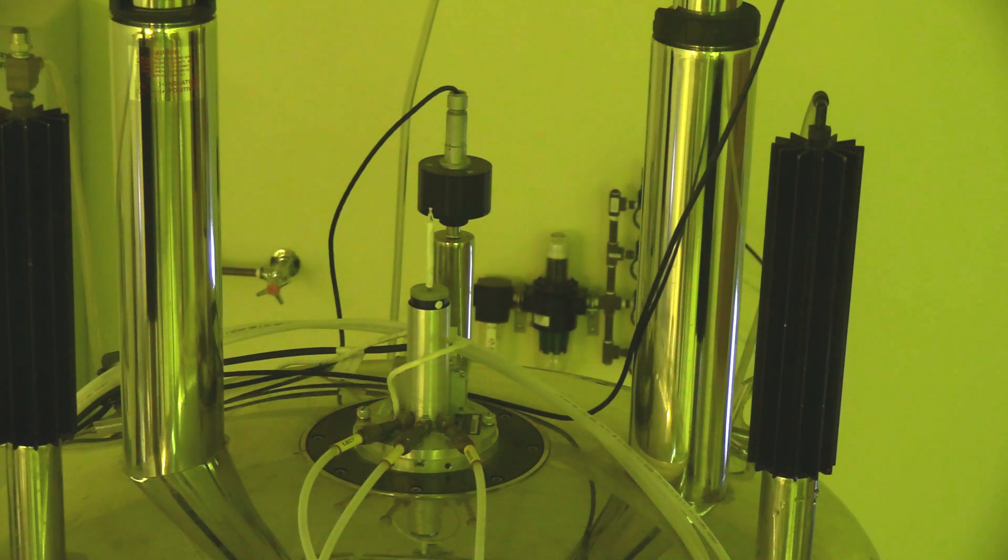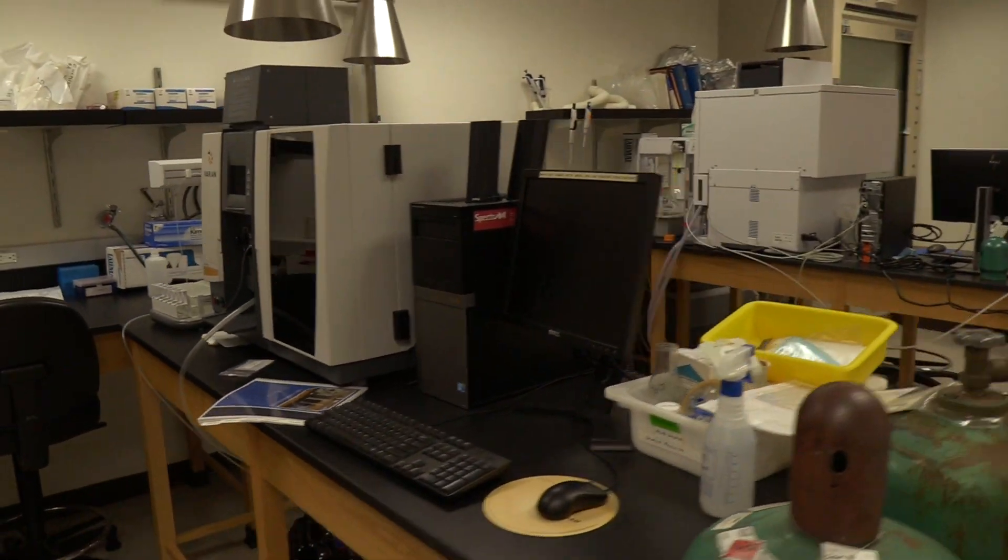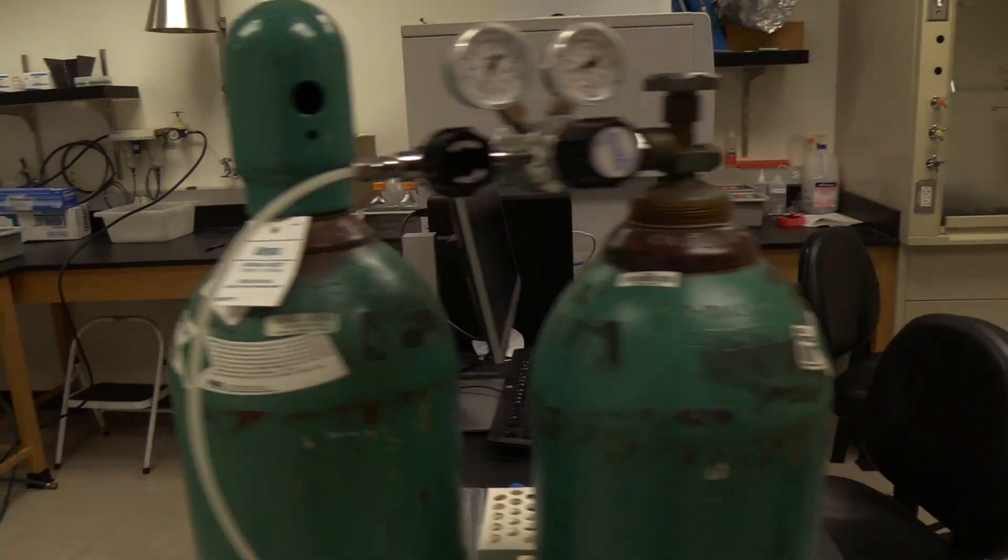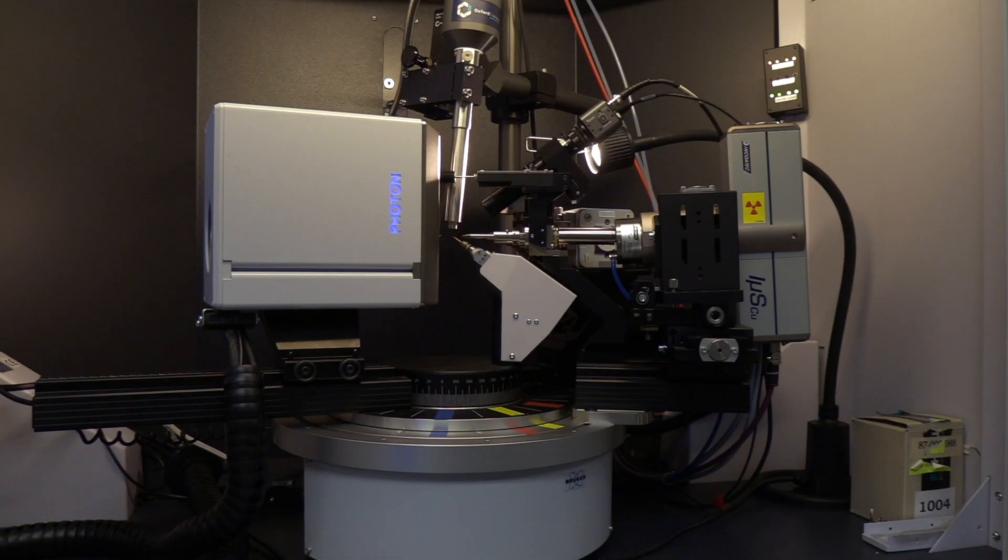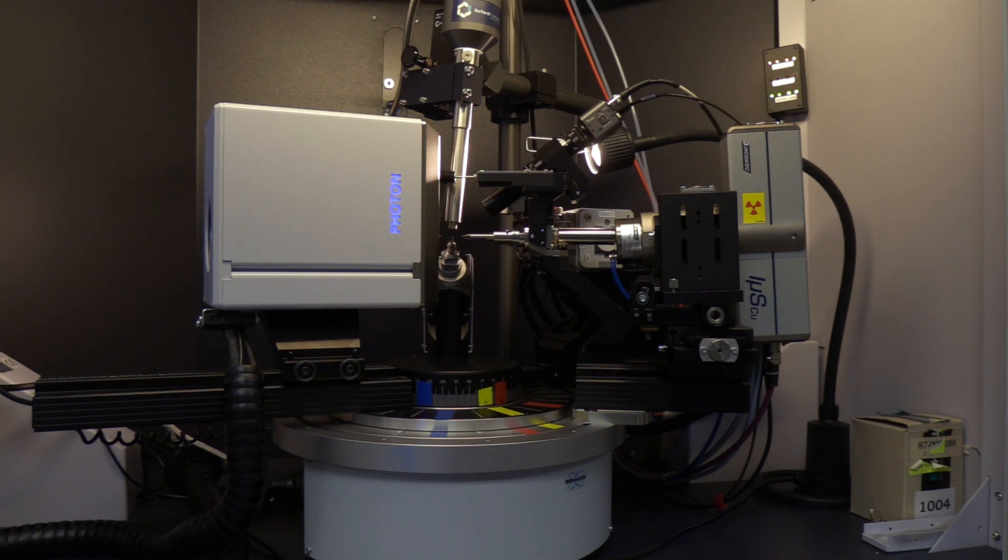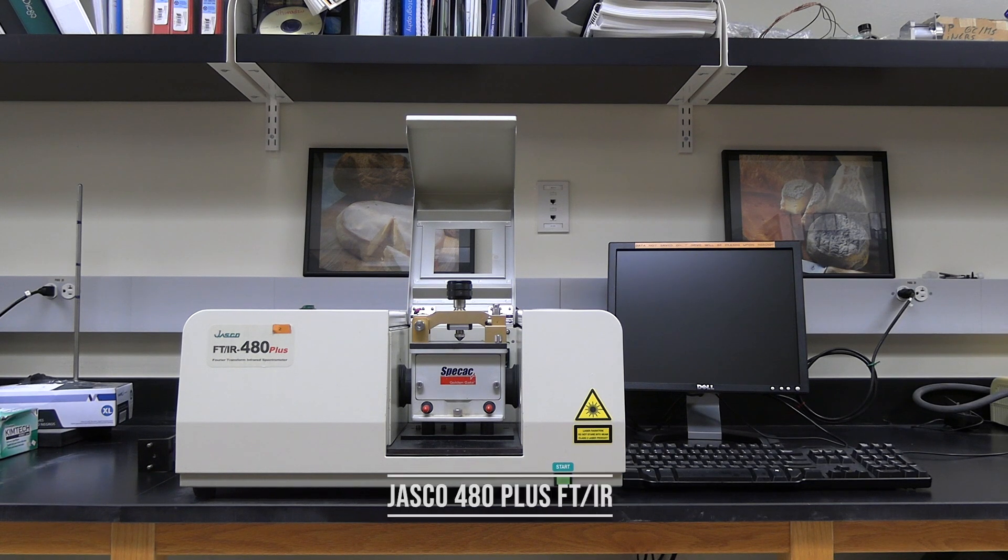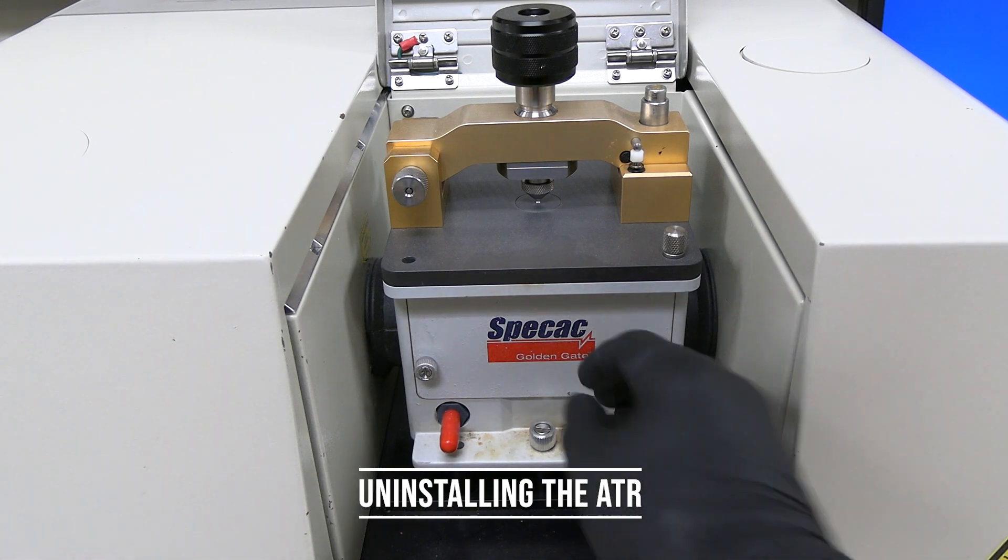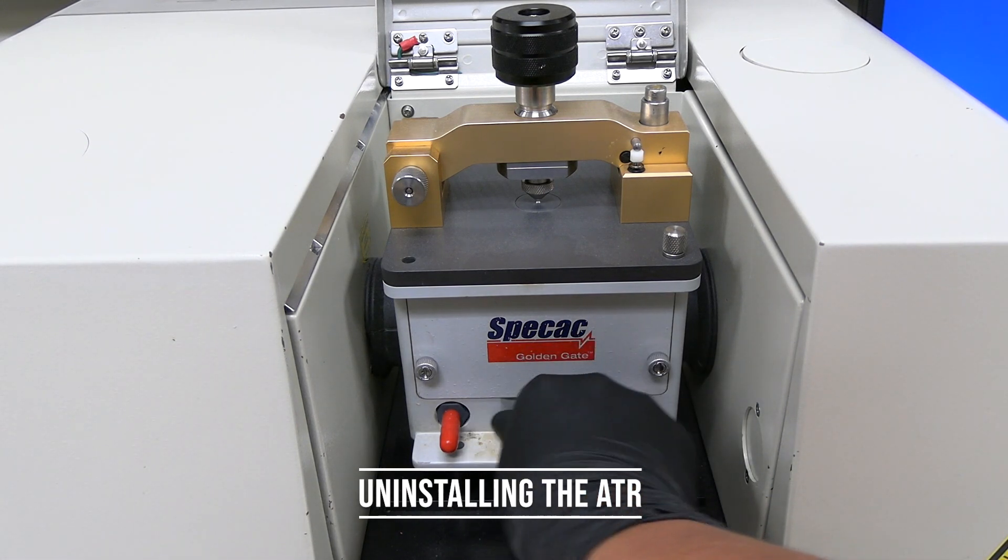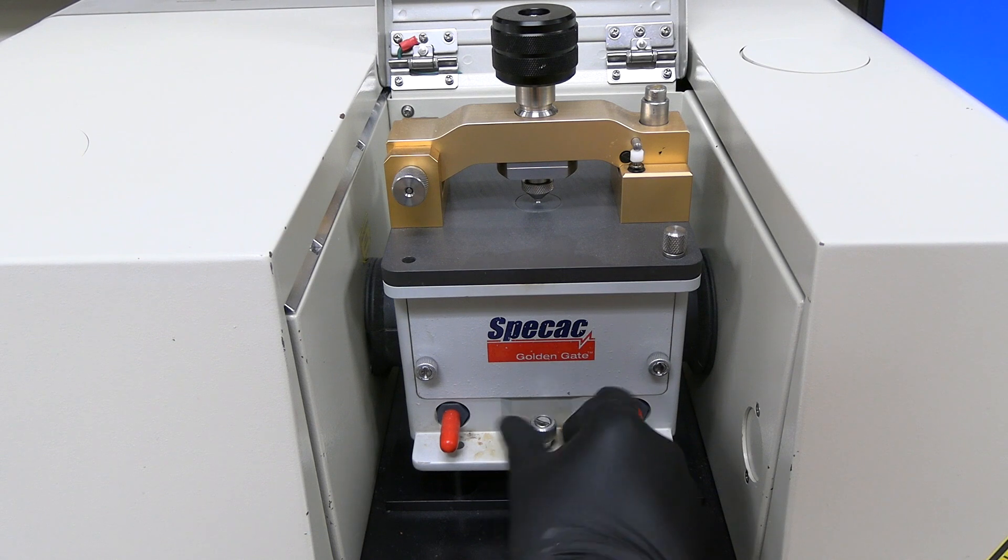Let's get started. Uninstall the ATR. The ATR is typically installed in the IR. To uninstall the ATR, turn the thumb screw counterclockwise.